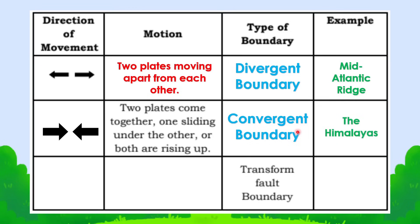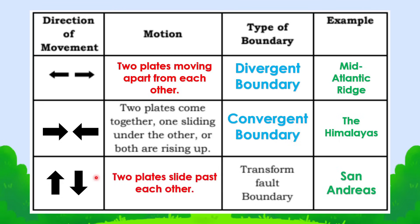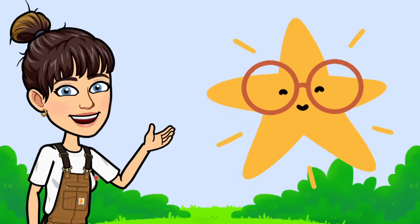Now let's have the last one: transform fault boundary. The direction or movement of the plates — they slide past each other. So the motion is two plates sliding past each other. An example of this is the San Andreas Fault.